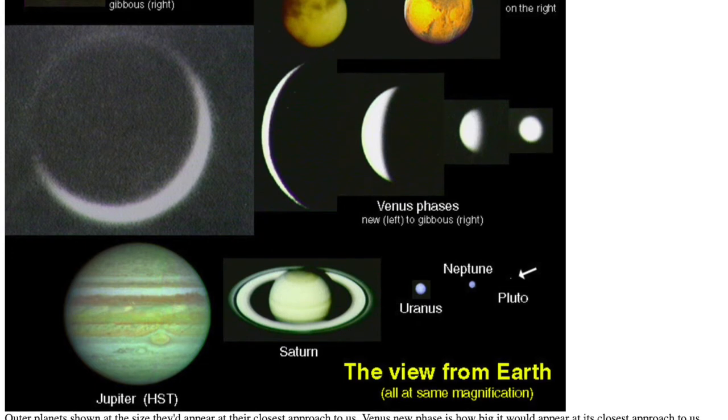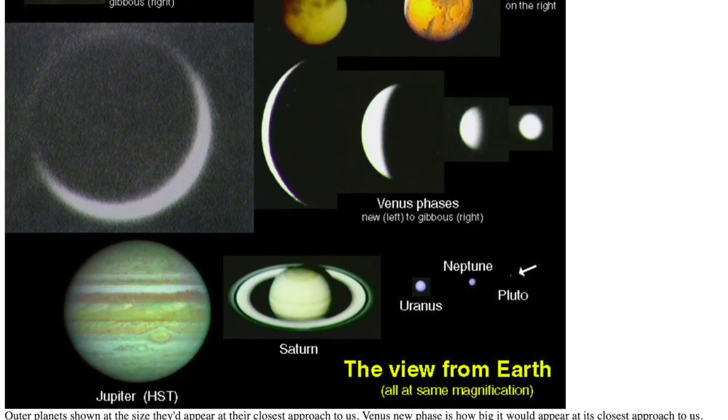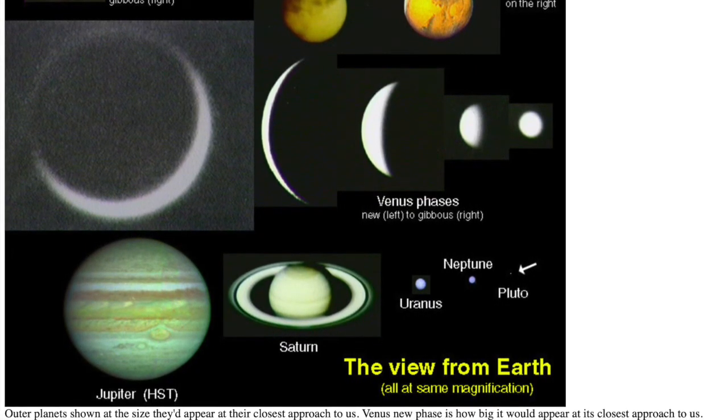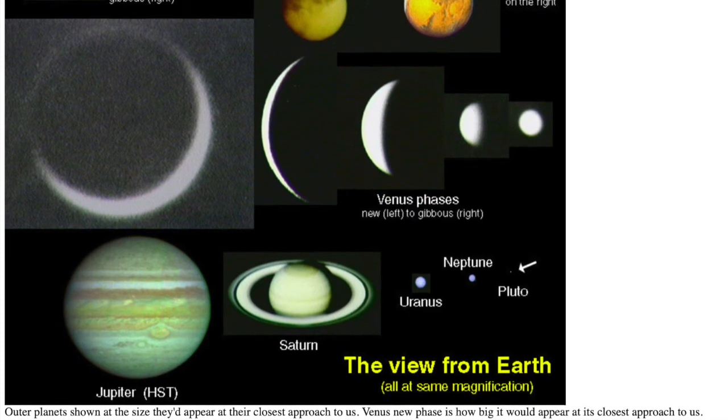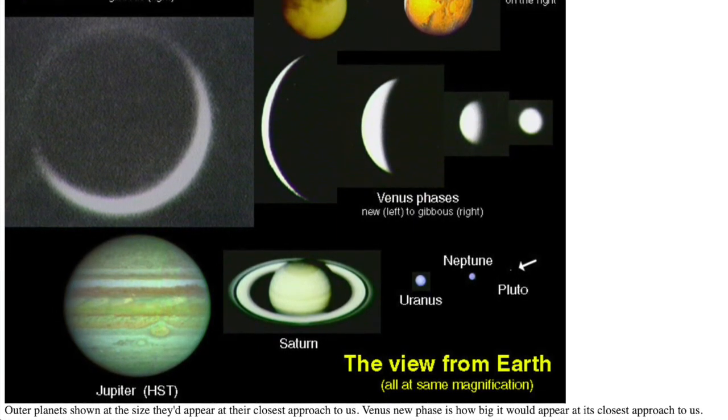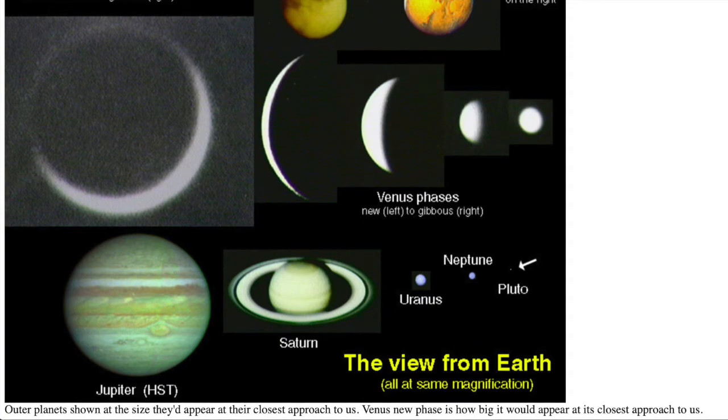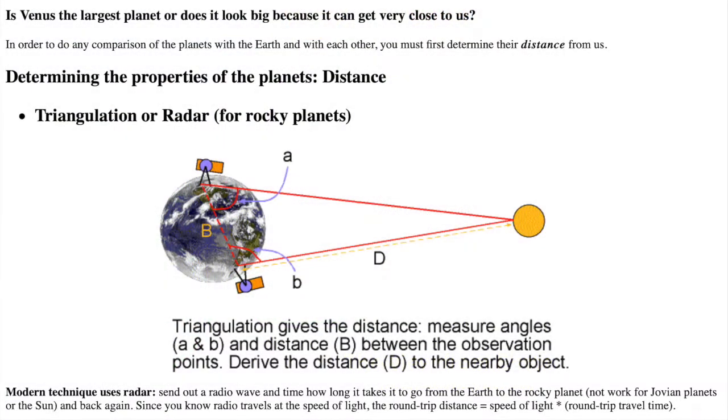You can measure how much material a planet has by looking at the orbital motions of moons circling it, but you need to know how big the moon orbits are. But to know how big the moon orbits are, you need to know how far away the planet is. In order to do any comparison of the planets with the Earth and with each other, you must first determine their distance from us.